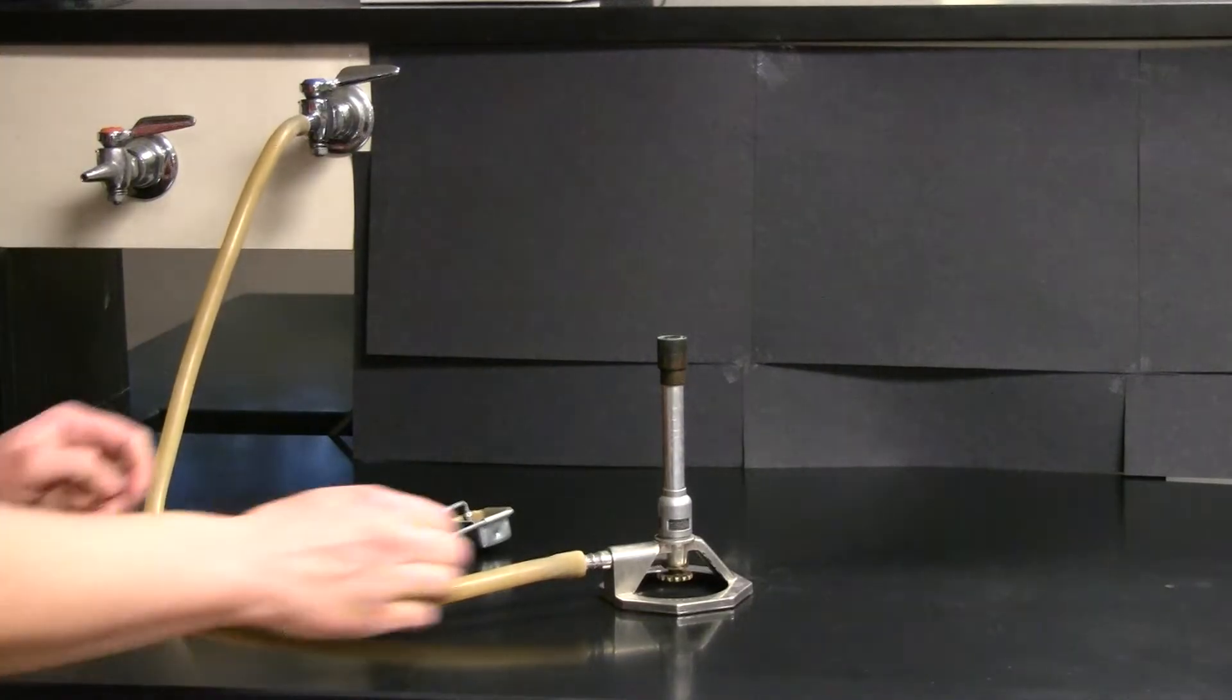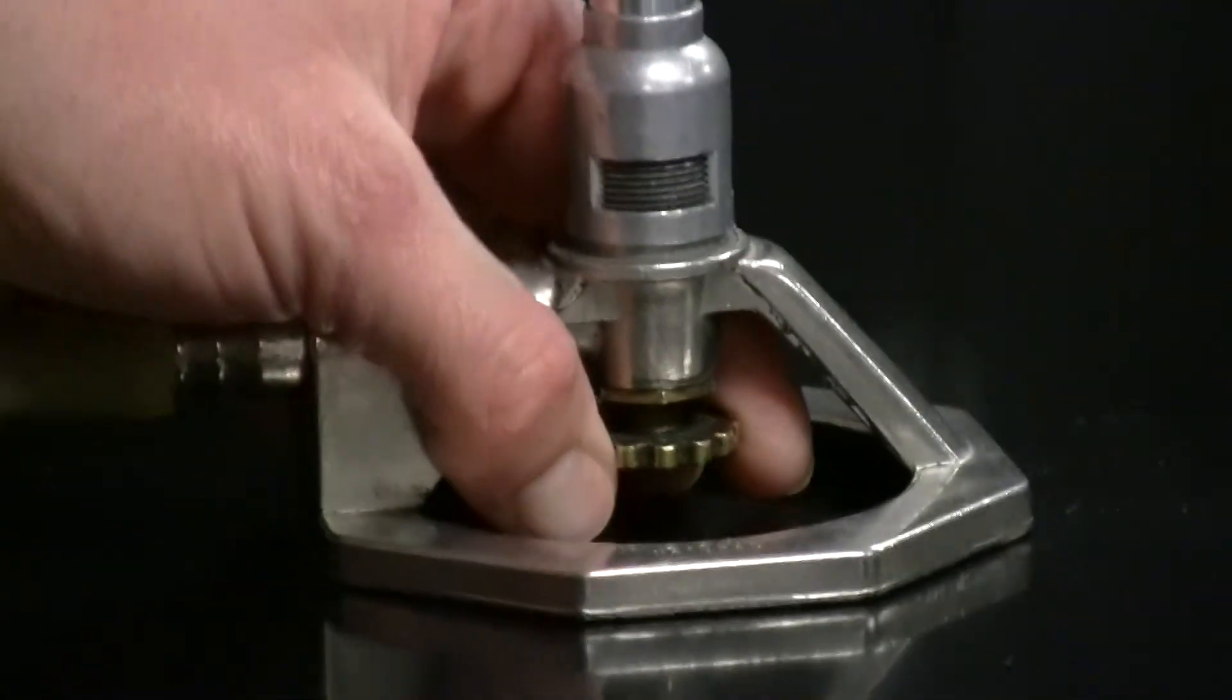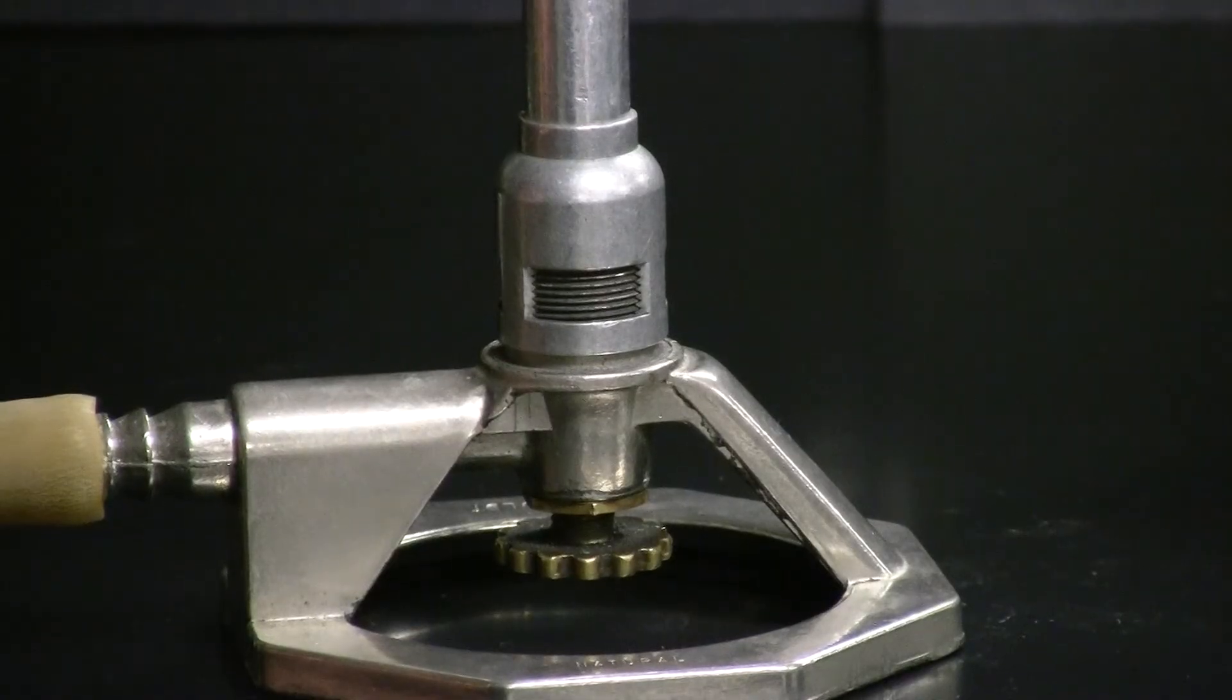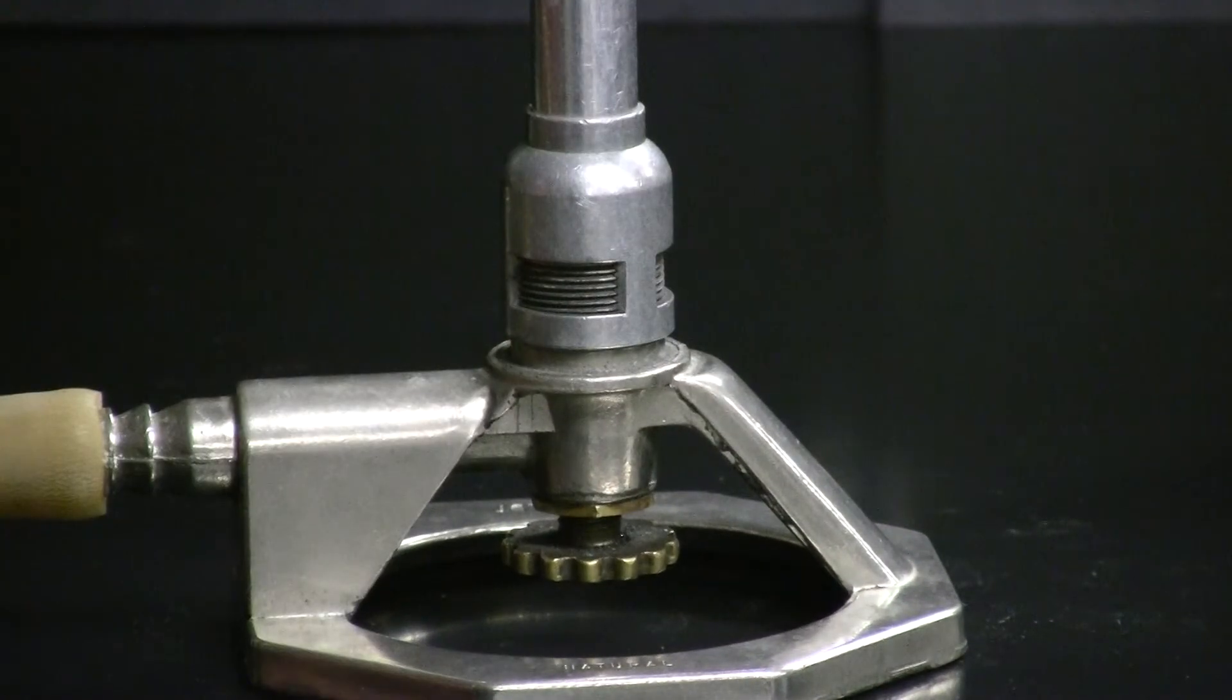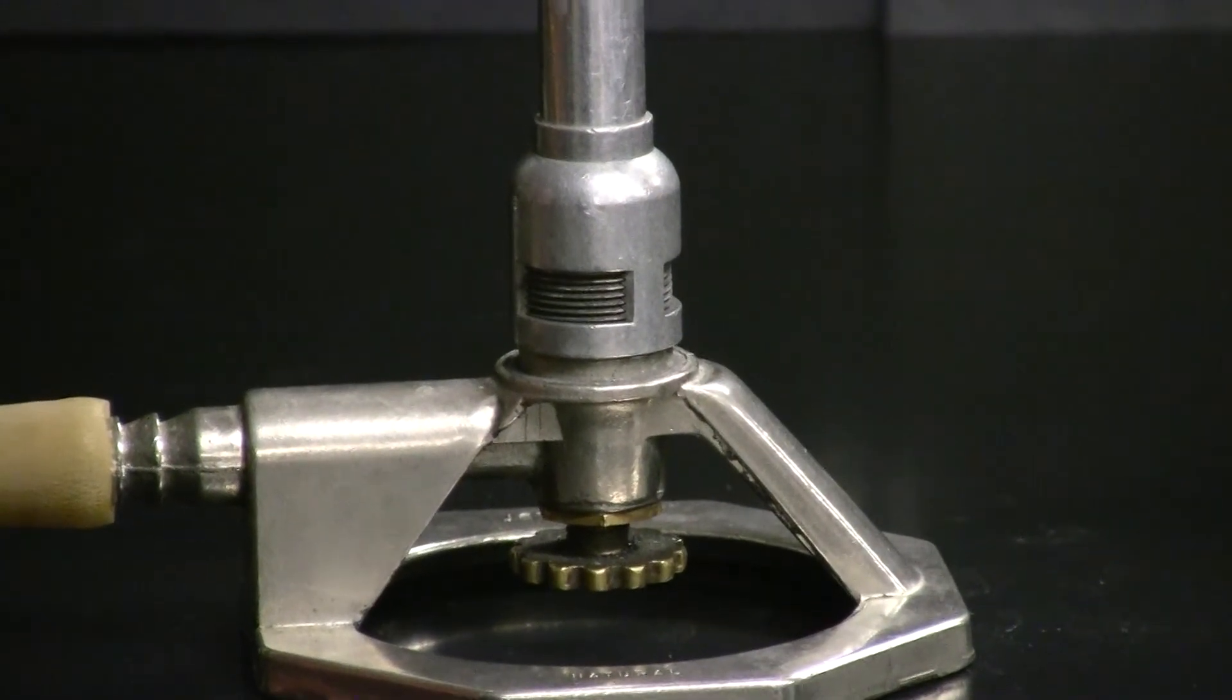Adjust your Bunsen burner by opening the gas valve about one full turn. Lefty loosey, righty tighty. You also want to open the air inlet valve about one full turn. Now turn on the gas at the bench top. Again, make sure that it is open all the way.